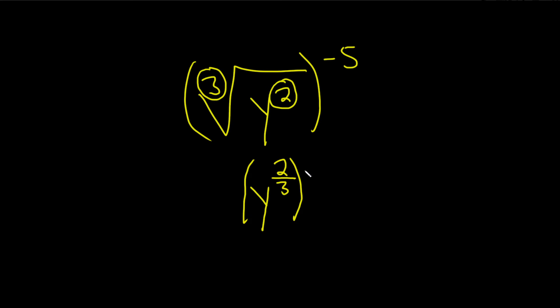And then the negative 5 here will hang out. Again, it's always this one divided by this one. Every time.